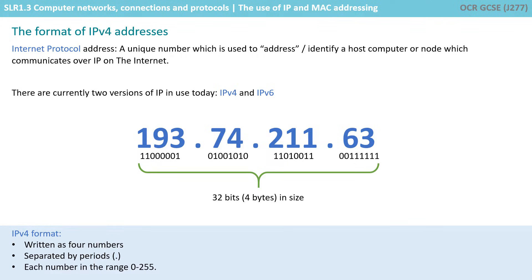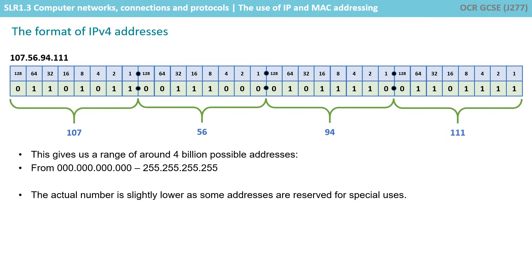Here's an example of a typical IPv4 address. It is written as four numbers separated by periods, and each number can be in the range 0 to 255. In total, an IPv4 address is 32 bits in size, or 4 bytes. These decimal numbers resolve into binary behind the scenes, and provide us with a range of around 4 billion addresses. The actual number available for use is slightly lower, as some addresses are reserved for special uses.